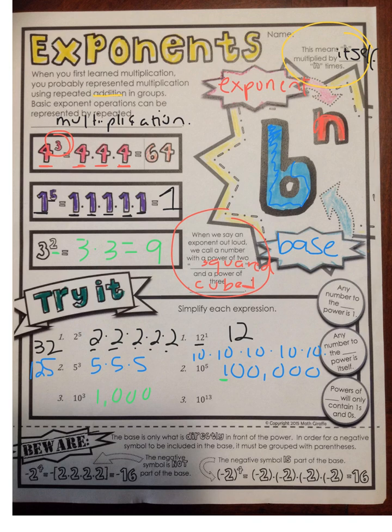Let's take a look at our three bubbles on the side. Any number to the zero power is 1. Any number to the first power is itself — like 12 to the 1 is 12. And powers of 10 will only contain ones and zeros, as you saw with the examples on both sides.